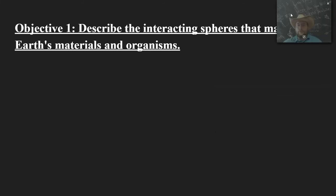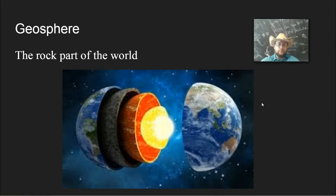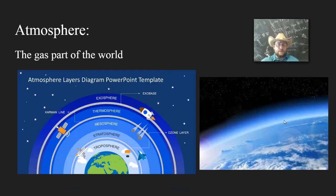The first objective was describing the different spheres that make up the Earth's materials and organisms. We talked about the geosphere, which is the rock part of the Earth, and the atmosphere, which is the gaseous part of the Earth.